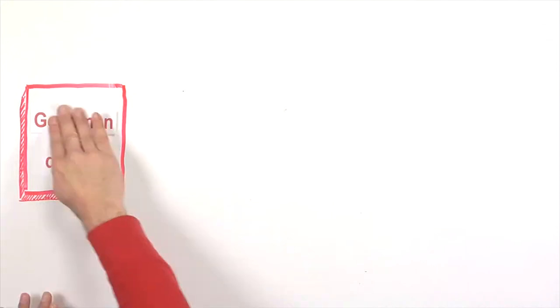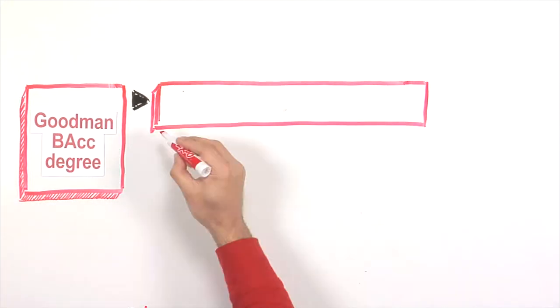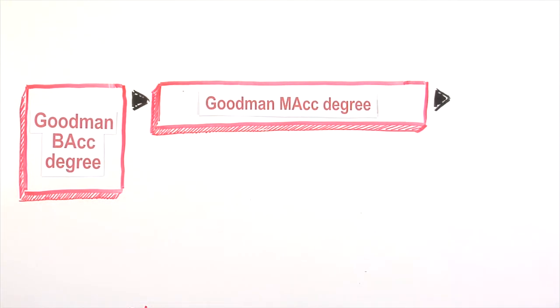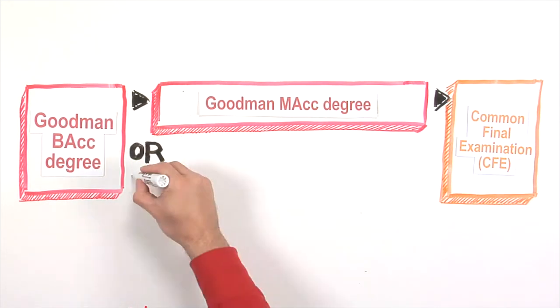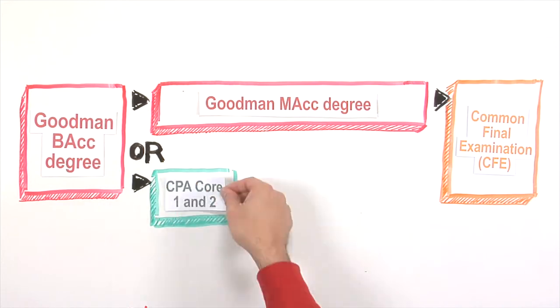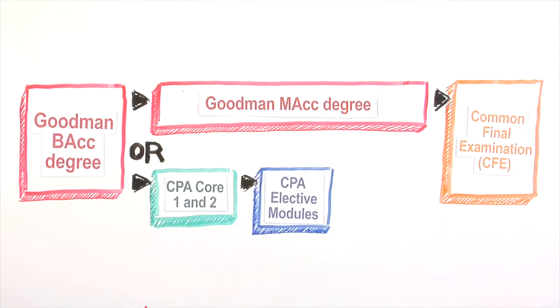Then take Goodman's 8-month Master of Accountancy program and you can go straight to writing the common final exam. If you don't go on to do your master's with Goodman, you can complete the CPA professional education program offered by CPA Canada.